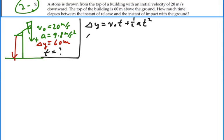So we have 60 is equal to 20 times time plus one-half times 9.8 times time squared. Or putting this in quadratic form, we have 4.9 t squared plus 20t minus 60 equals zero.